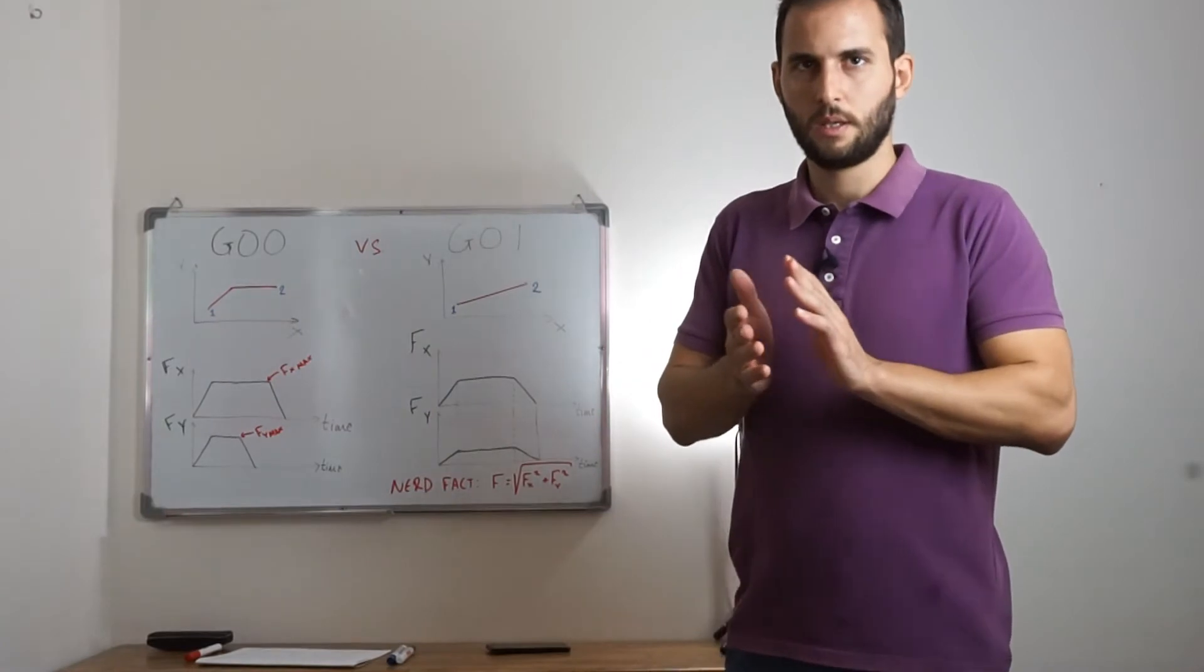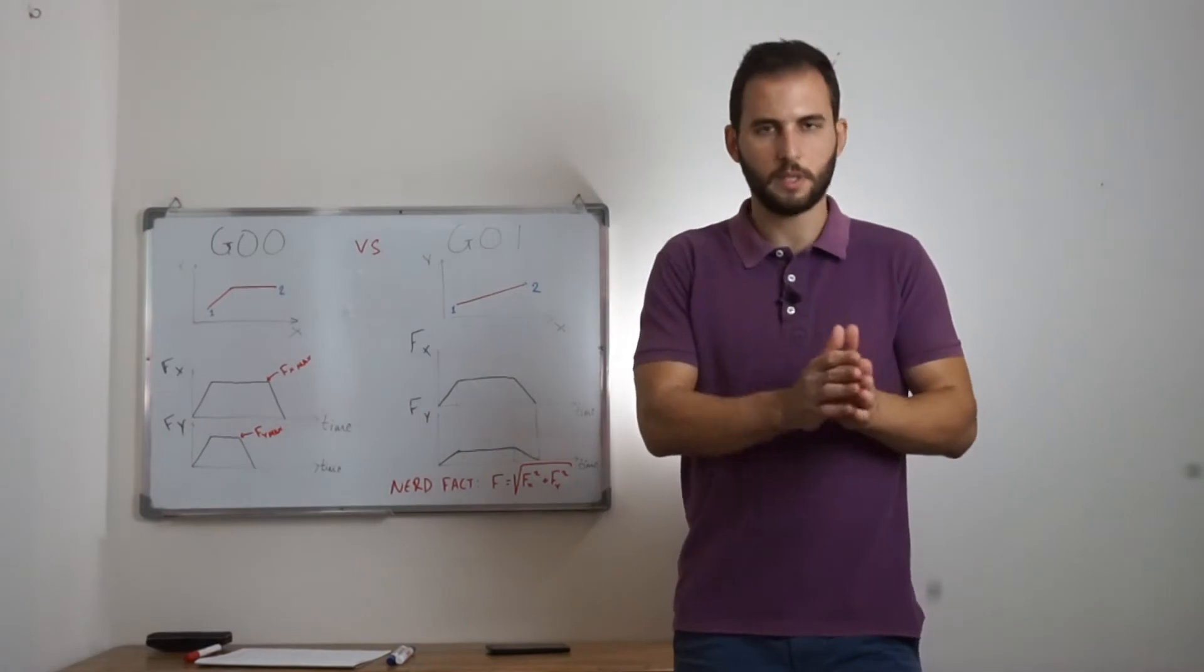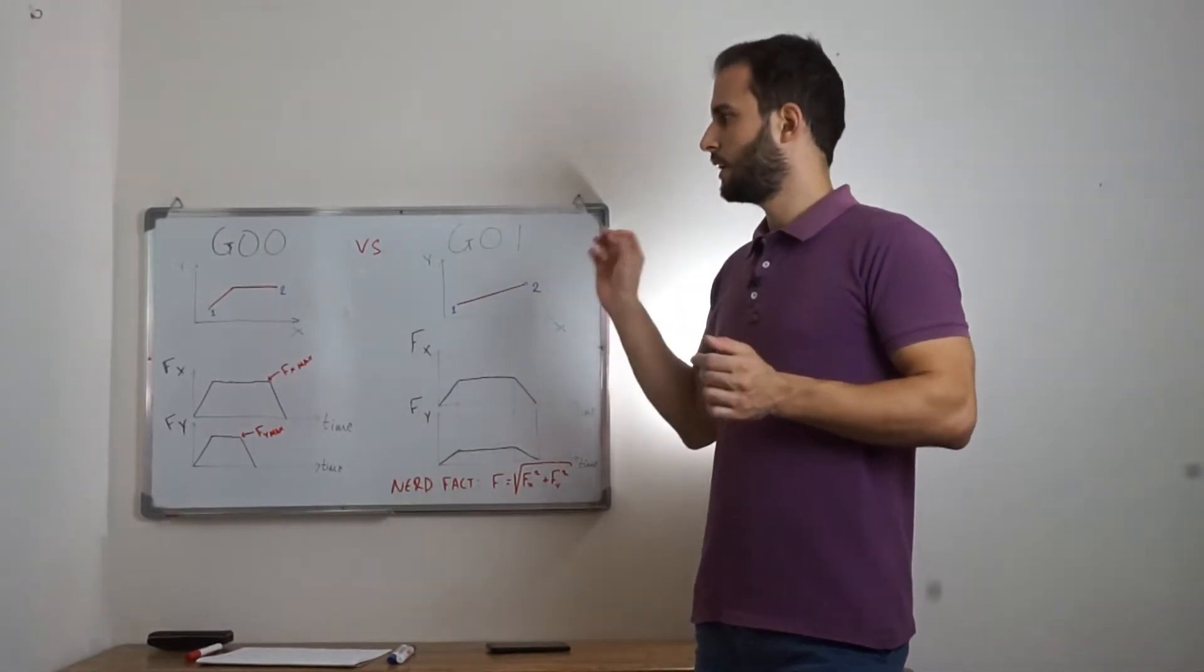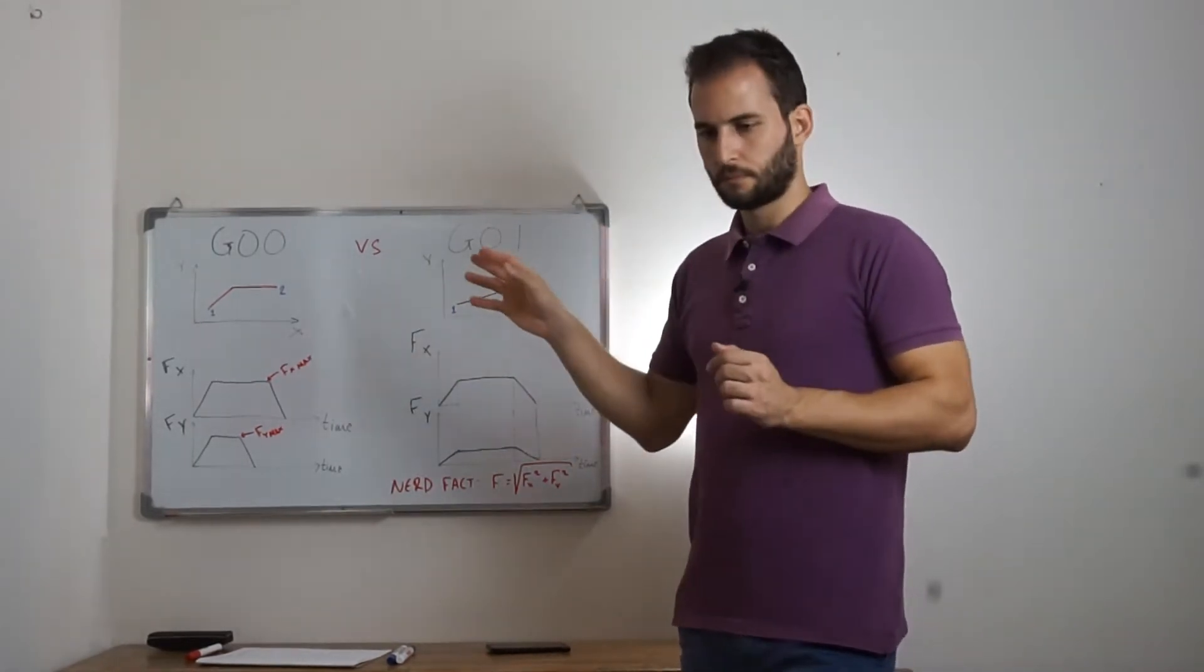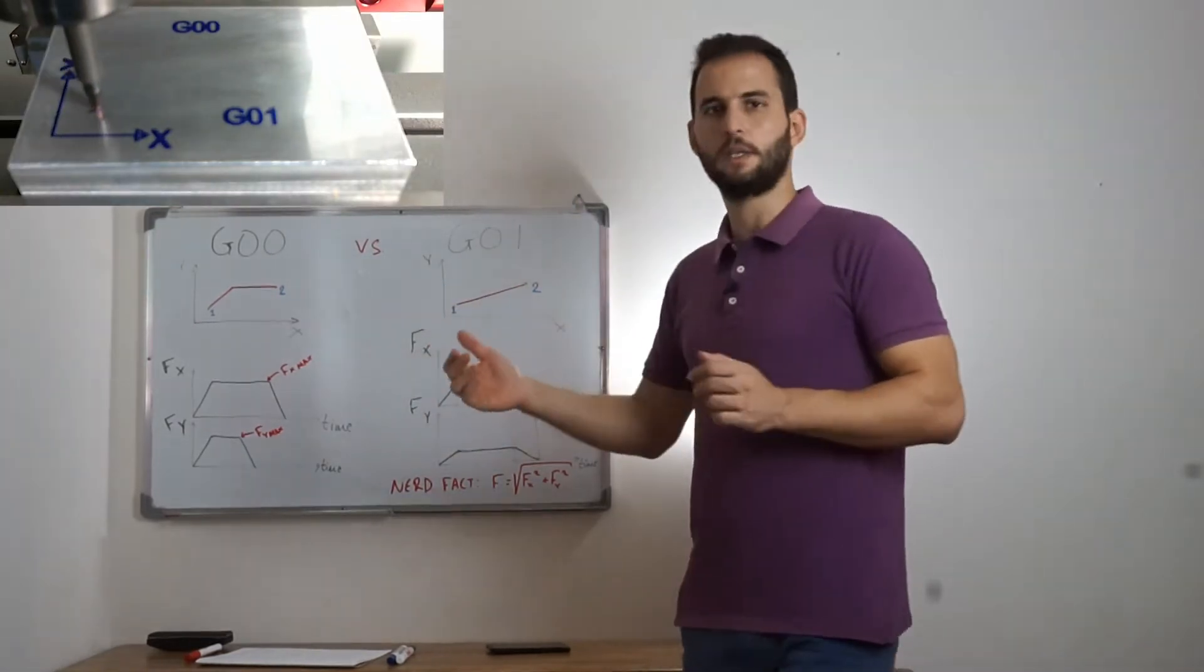Okay, so now let's see an example. Let's say that we have to go from point 1 to point 2. When we program this movement by using G0, the result is not a straight line.